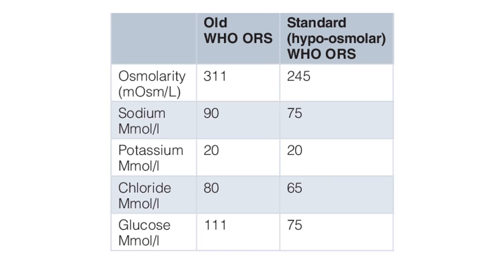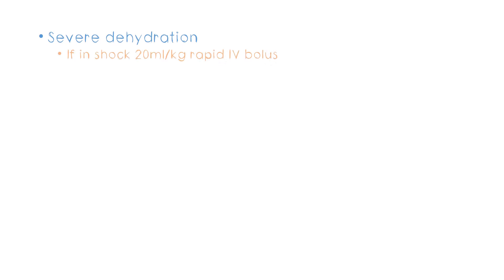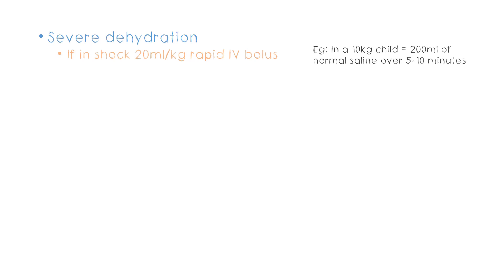In severe dehydration, if the patient is in shock, we have to give a bolus of fluid — meaning it's given all at once. The volume is according to the child's ideal weight and is 20 ml per kg. So if the child is 10 kilograms, we give 200 ml of normal saline within about 5 to 10 minutes. After the patient's blood pressure has picked up and the initial worrying stage has passed, we slowly correct the dehydration.